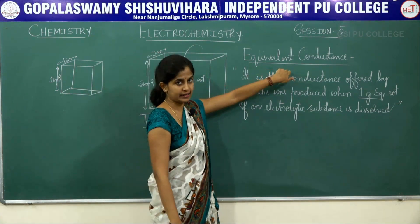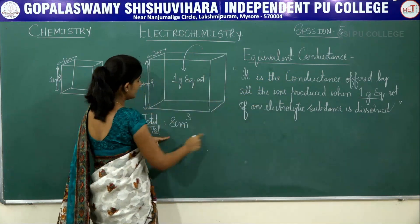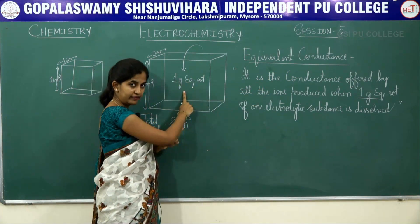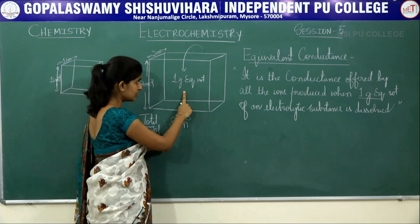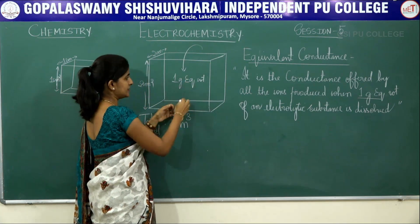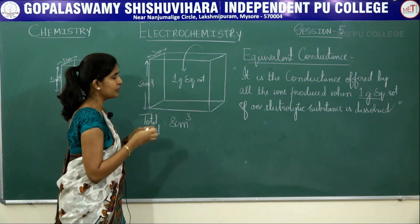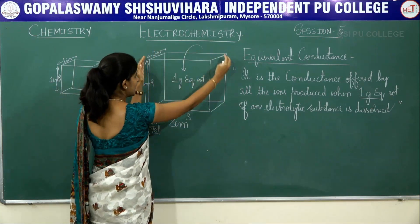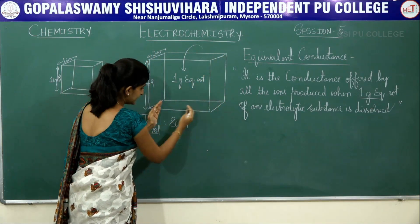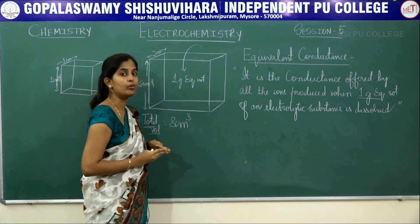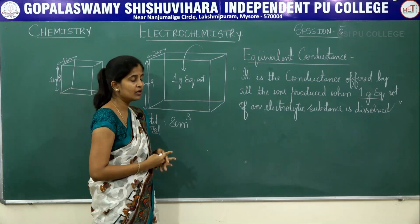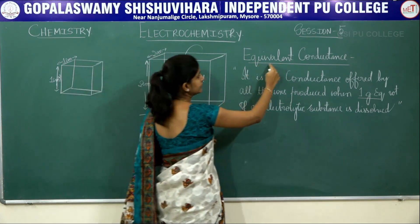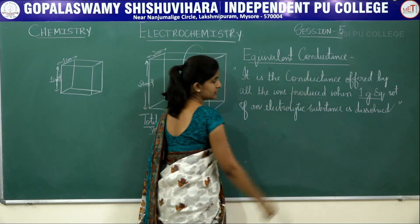So the total volume is 8 cm cube, and I have dissolved one gram equivalent weight of a substance. The substance dissociates into ions, producing n number of ions. All the ions present inside this 8 cm cube of electrolytic solution — the conductance they offer — is called your equivalent conductance.